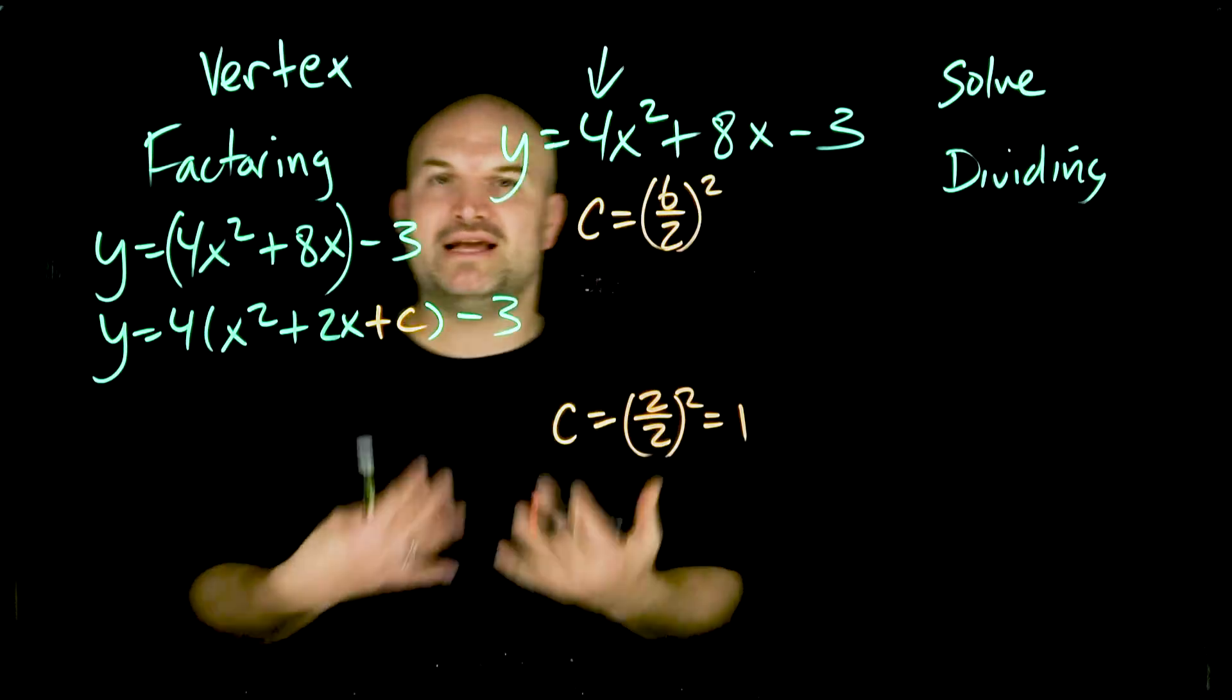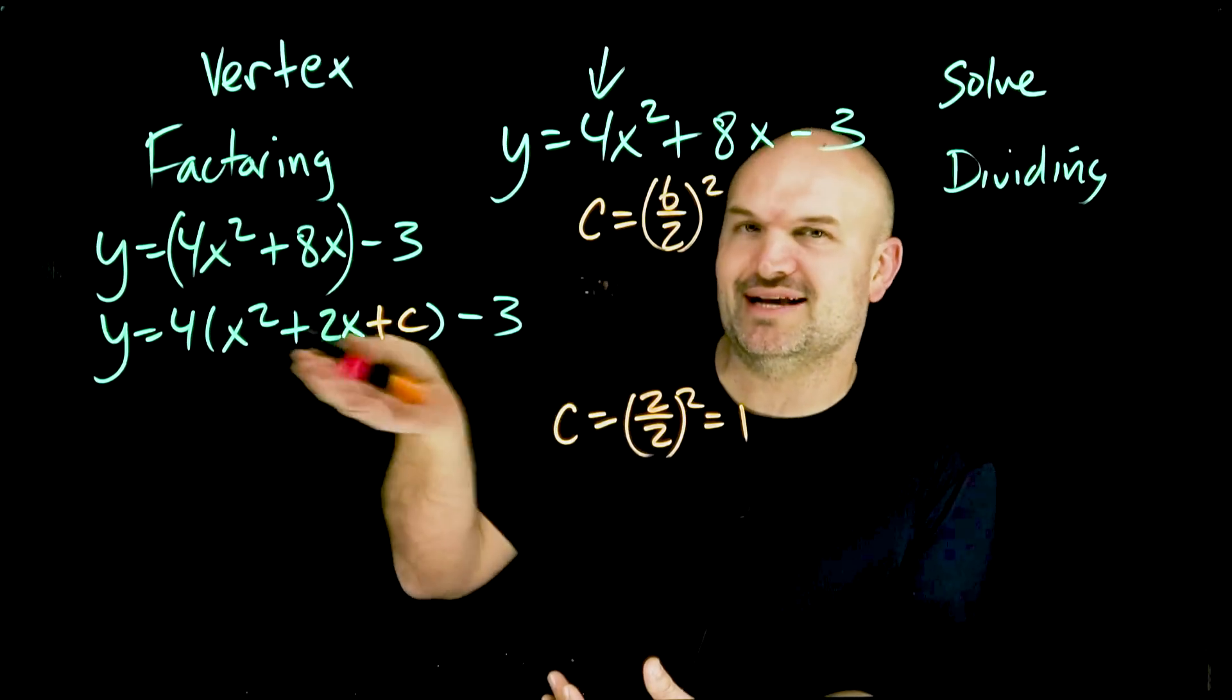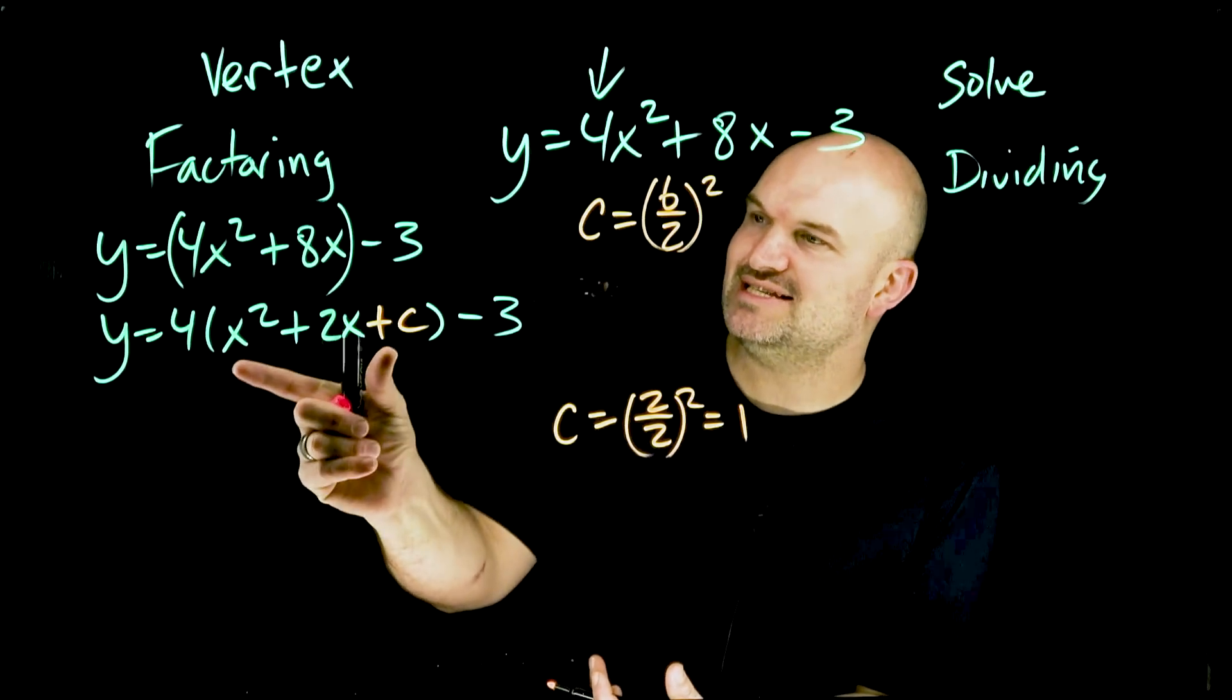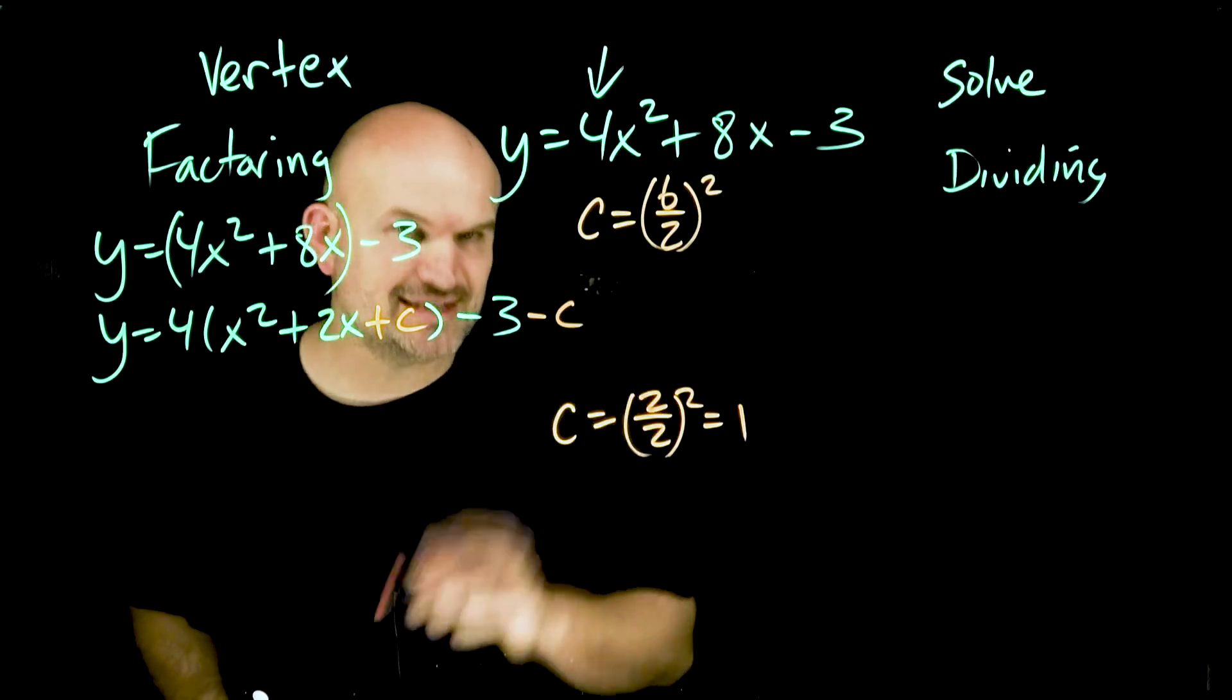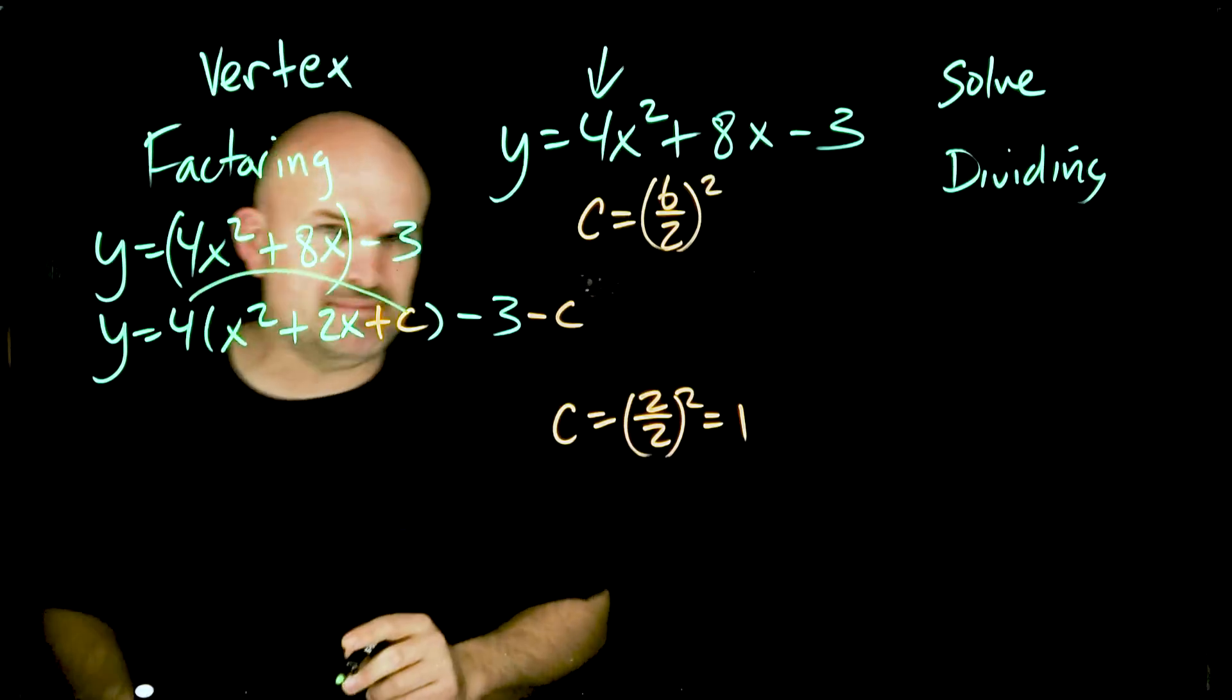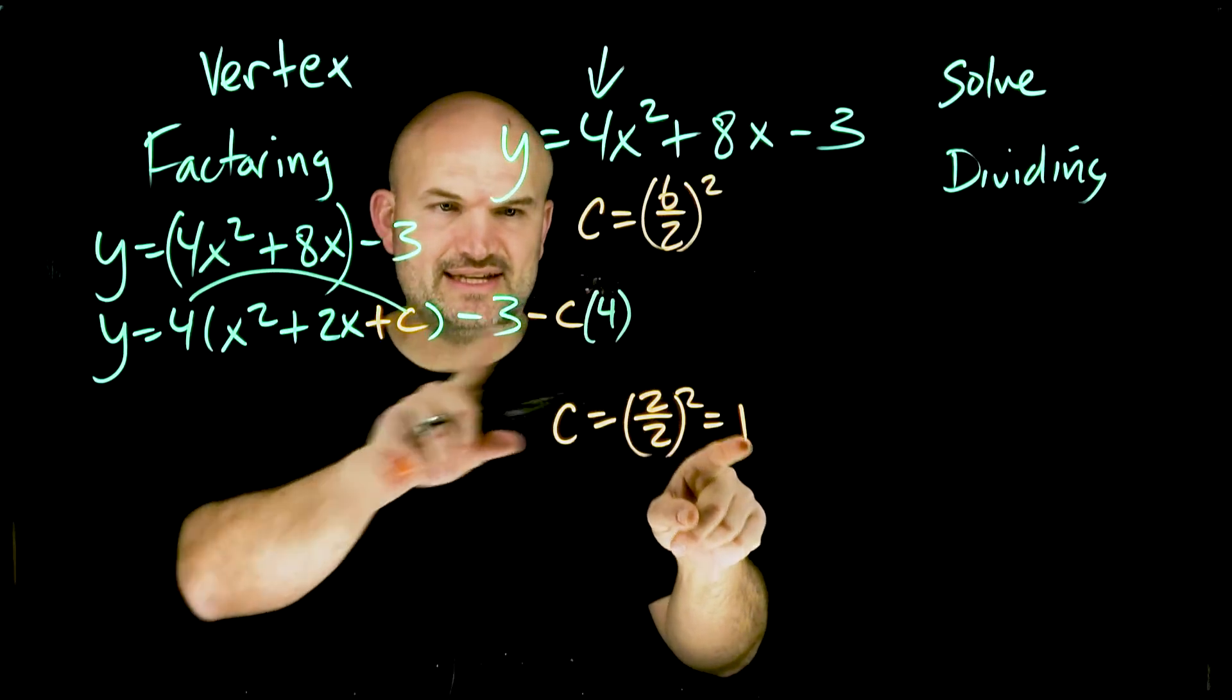It's really important when you add a c you just can't randomly add a c to an equation because now the equation is off balance. If I'm adding a c inside of this parentheses to create this perfect square trinomial, I also have to make sure I subtract a c. To further complicate things, you need to recognize I'm not really adding a c. I'm adding a c that via distributed property is being multiplied by four. So when I subtract this c, I also need to multiply it by four.